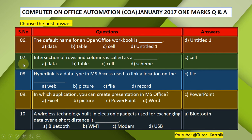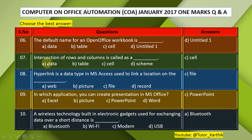Question 7: The intersection of rows and columns is called —. A. Data, B. Table, C. Cells, D. Scheme. The correct answer is C — Cell. The intersection of rows and columns is called a cell.